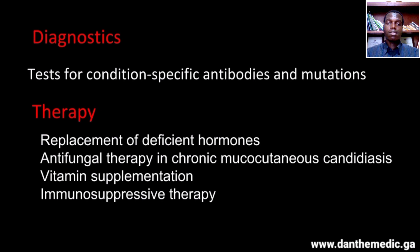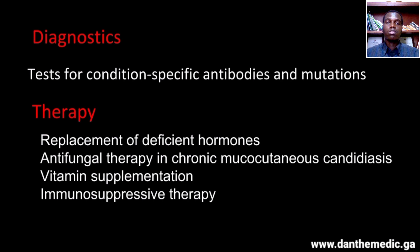As for the diagnosis, we usually test for condition-specific antibodies and mutations. For instance, if there is Hashimoto's thyroiditis, we check for thyroid peroxidase antibodies. If there is pernicious anemia, we check for anti-parietal cell antibodies, and so on. Or if there is a mutation in the autoimmune regulator gene, we check for those mutations.